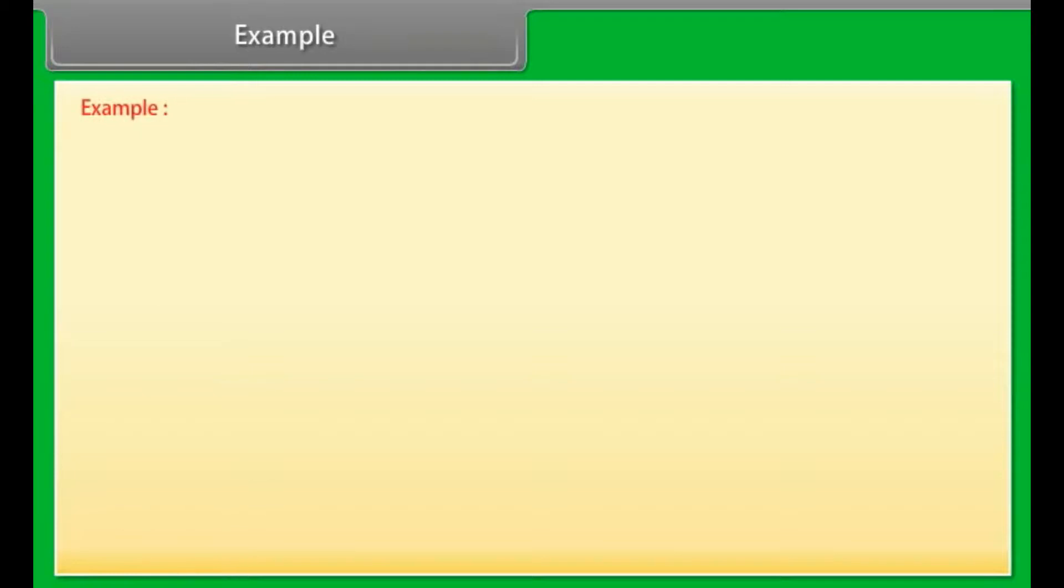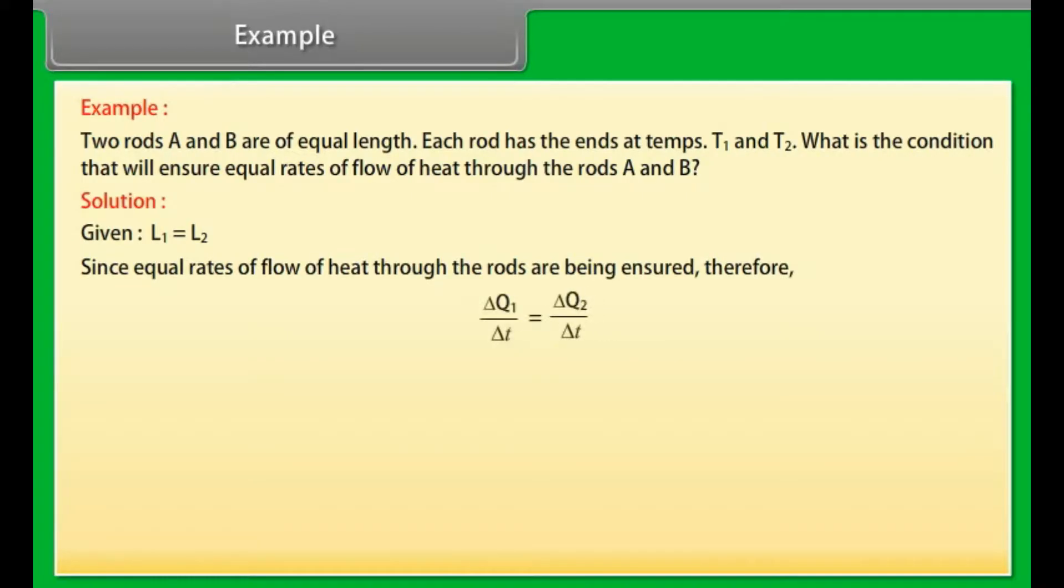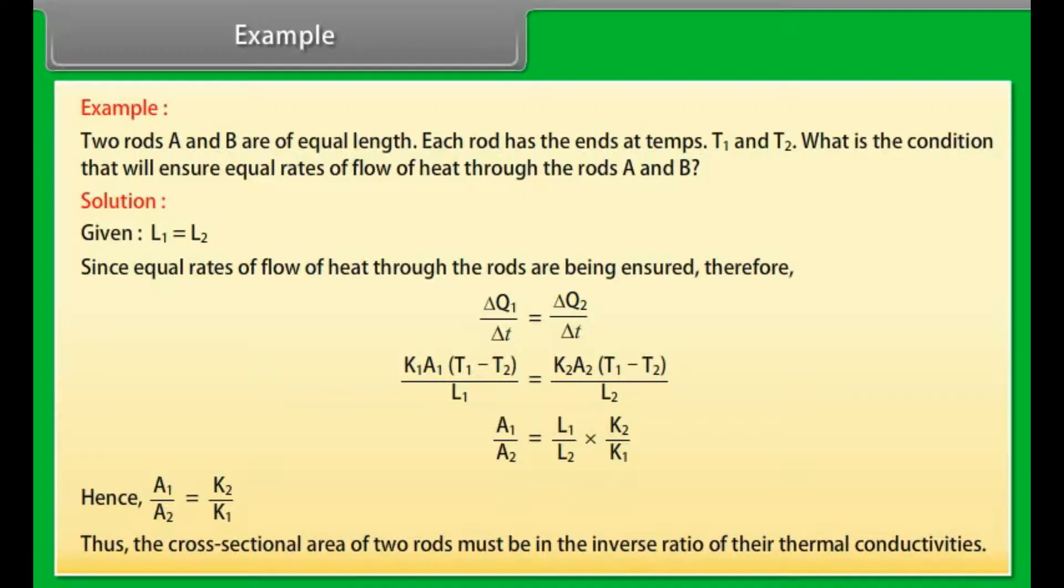Example. Let us take an example of thermal conductivity. Two rods A and B are of equal length. Each rod has the ends at temperature T₁ and T₂. What is the condition that will ensure equal rates of flow of heat through the rods A and B? Let's see the solution. Given L₁ = L₂. Since equal rates of flow of heat through the rods are being ensured, therefore ΔQ₁/Δt = ΔQ₂/Δt. On solving the expression we get A₁/A₂ = (L₁/L₂)(K₂/K₁). Hence A₁/A₂ = K₂/K₁. Thus the cross sectional area of two rods must be in the inverse ratio of their thermal conductivity.